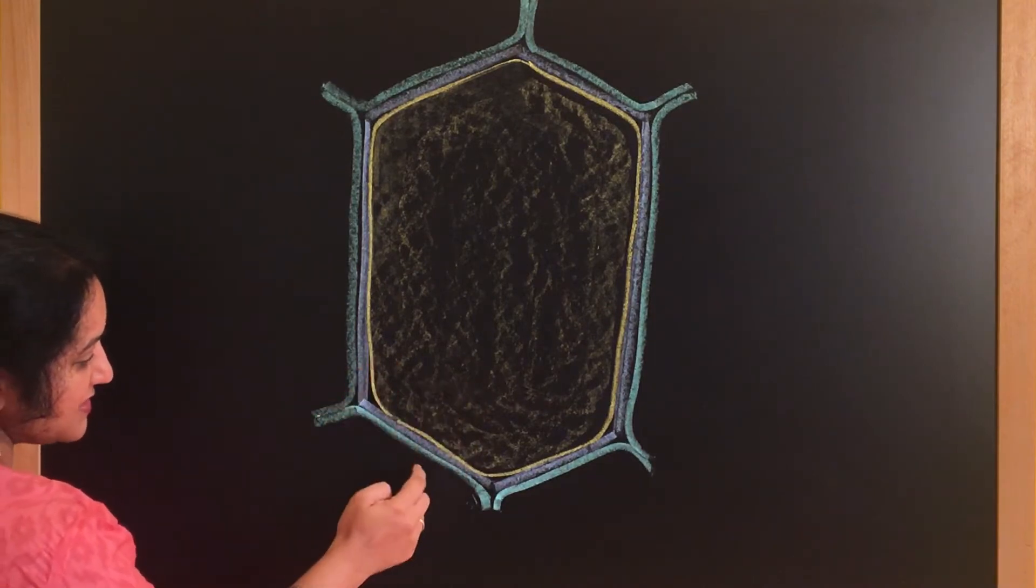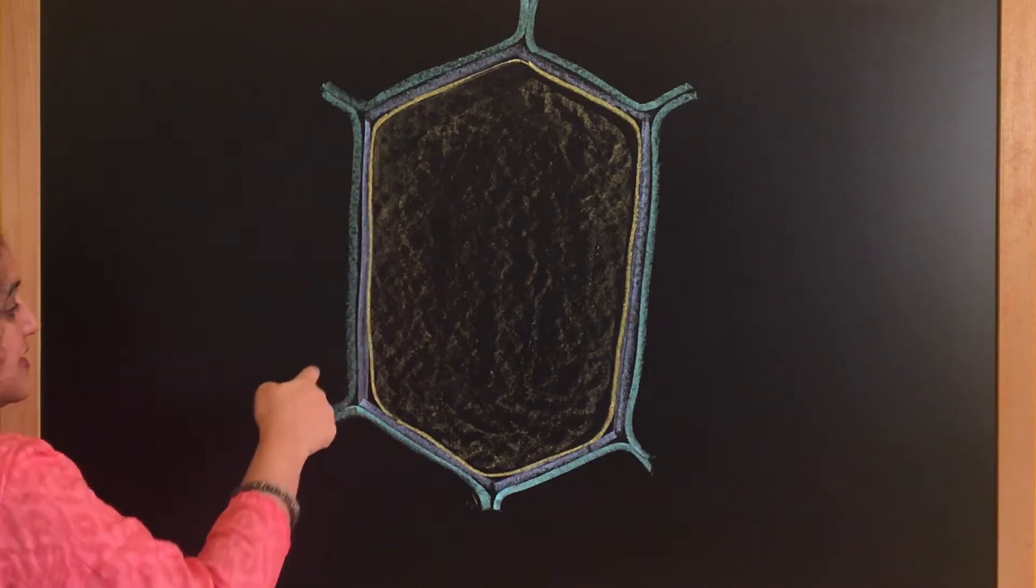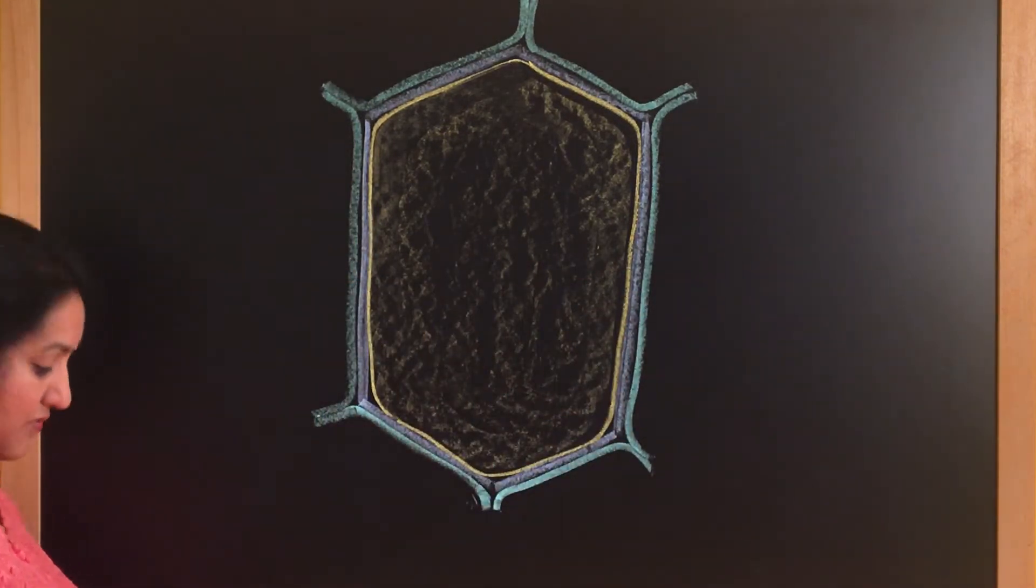this plant cell is surrounded by six cells, and these green lines are the cell walls of these six separate cells.